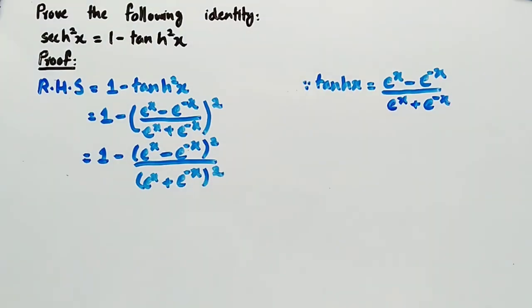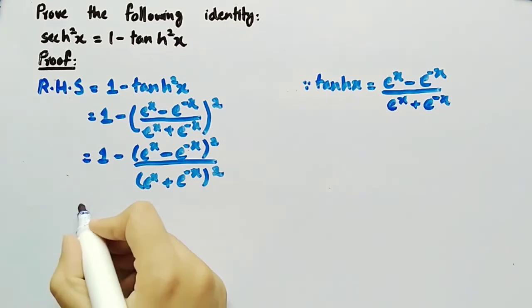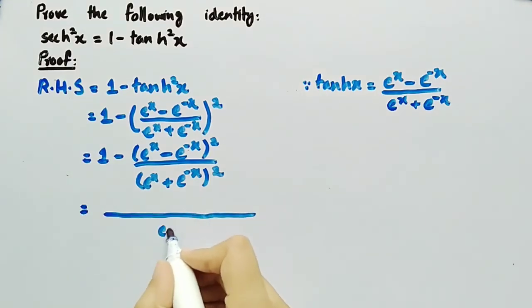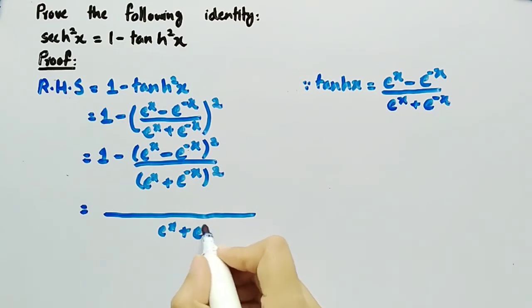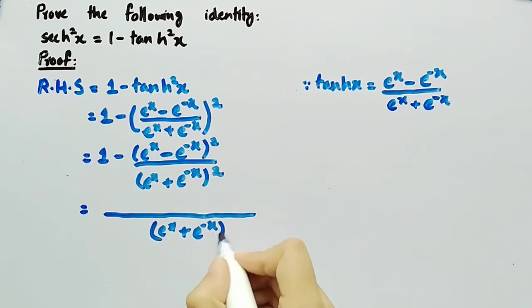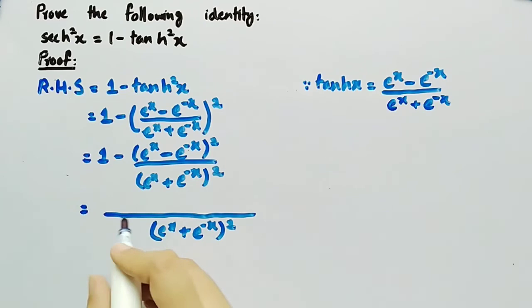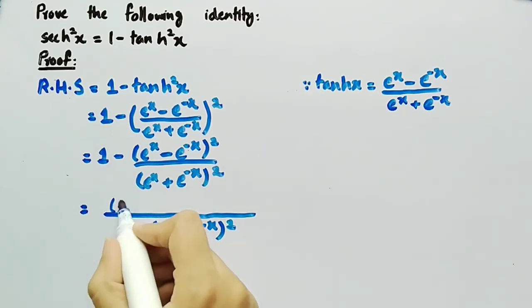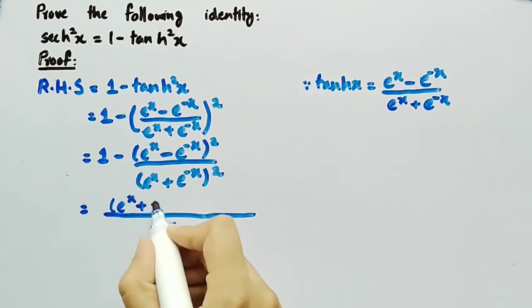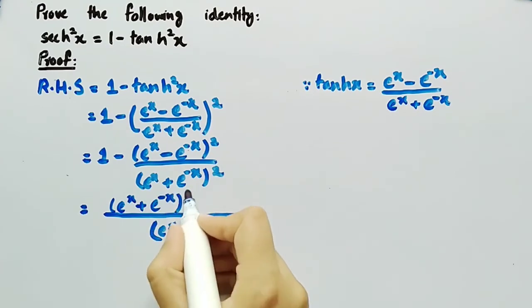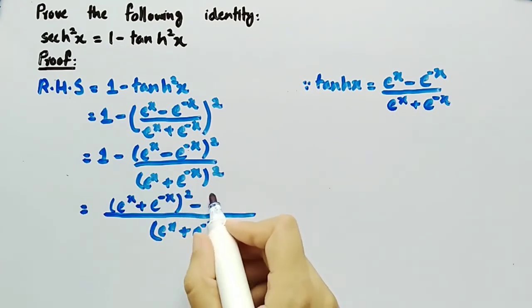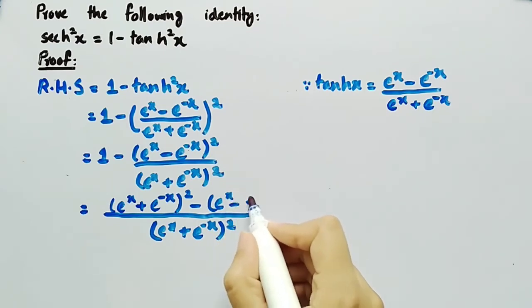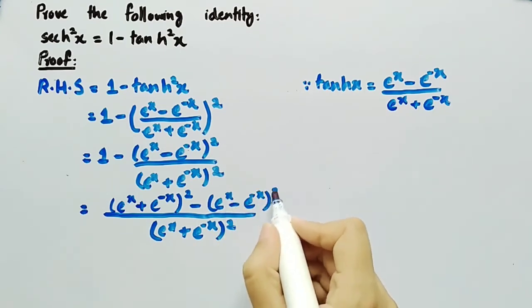After taking LCM, we can write it as (eˣ plus e⁻ˣ)² in the denominator, and in the numerator there will be (eˣ plus e⁻ˣ)² minus (eˣ minus e⁻ˣ)².